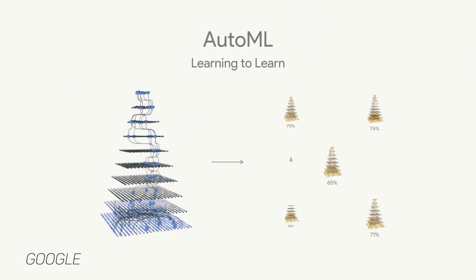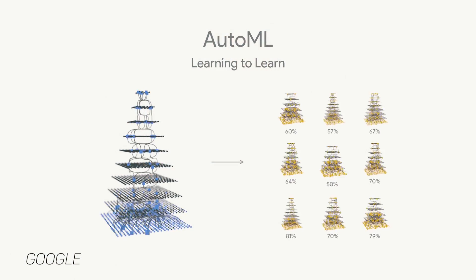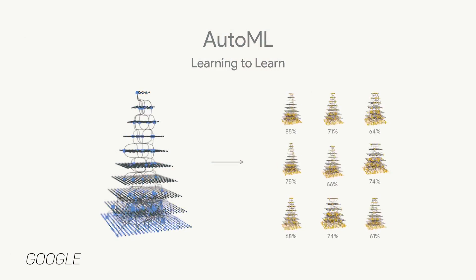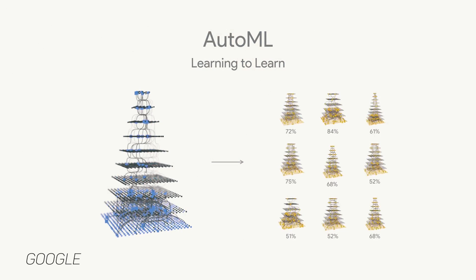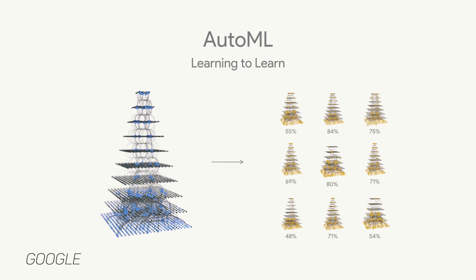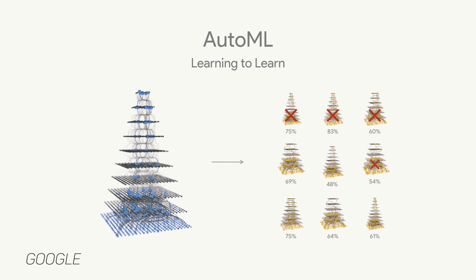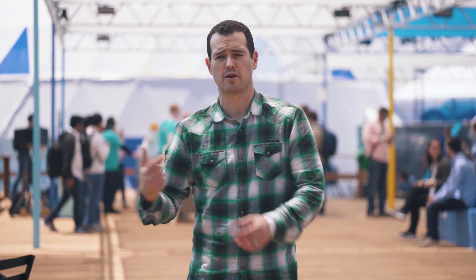Google spent an inordinate amount of time talking about machine learning — and every time they said that, it was mostly like Skynet flashbacks. But they did a lot with machine learning when it comes to cut, copy, and paste with Android O.